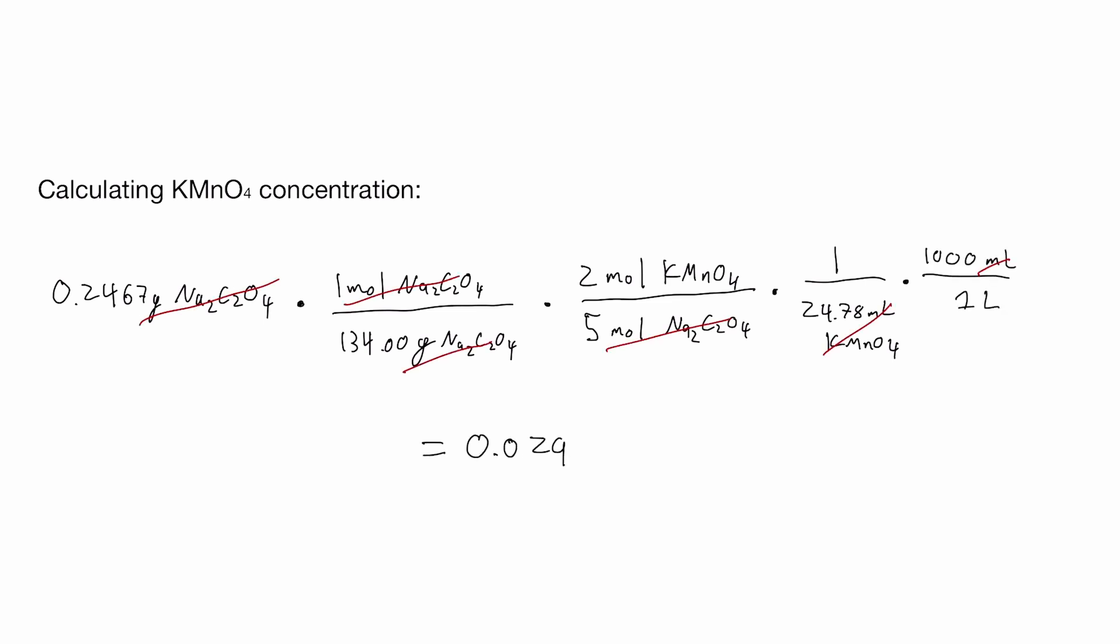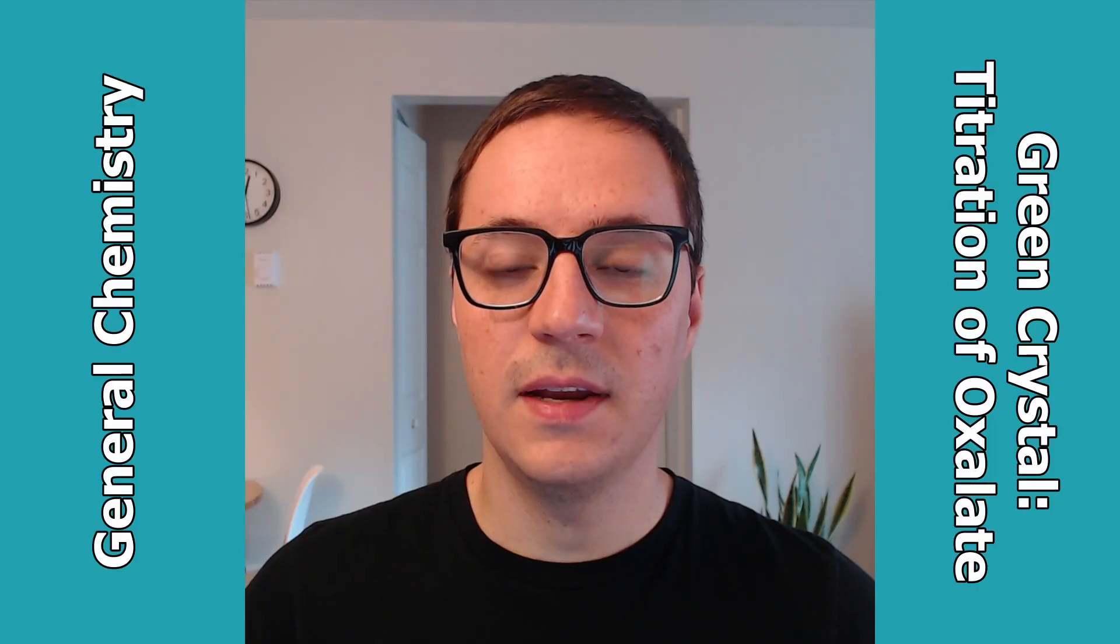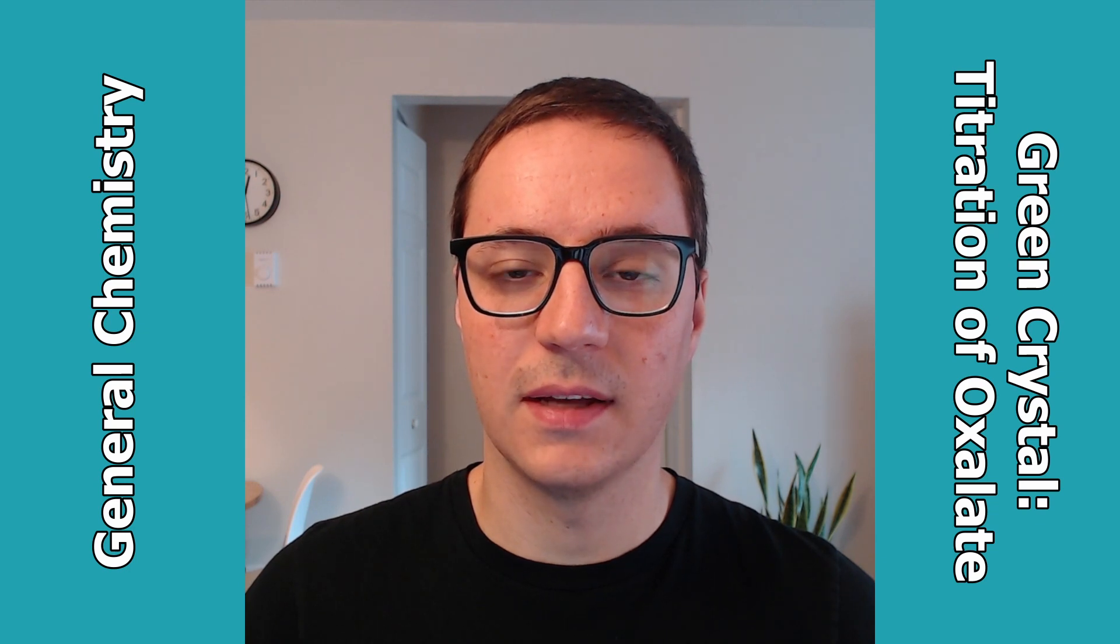This is the calculation you should perform in class so you can share your value with your group members. You should then average your value and their values to obtain an average permanganate concentration.